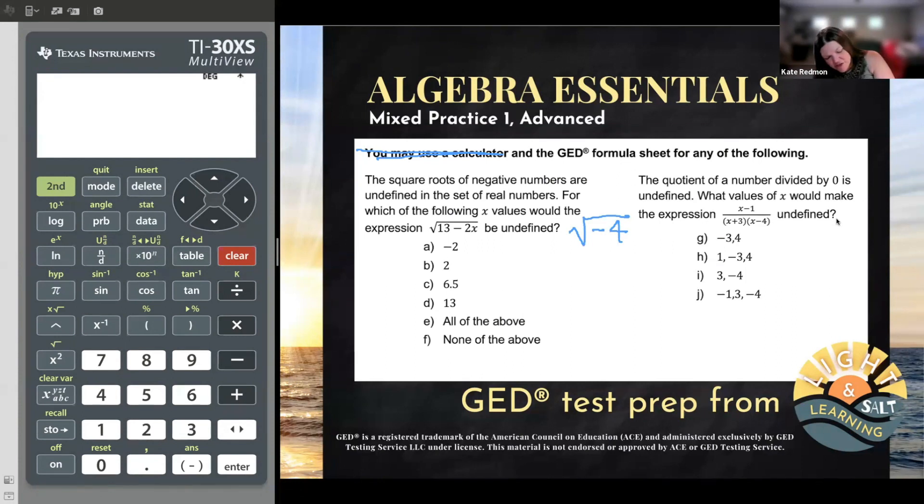So what does that mean to us with our expression? There's our expression. Well, what we see inside of our expression is 13 minus 2x. It has a variable. It has a letter in it. It has x in it. I don't know if it's positive or negative until I know what x says.